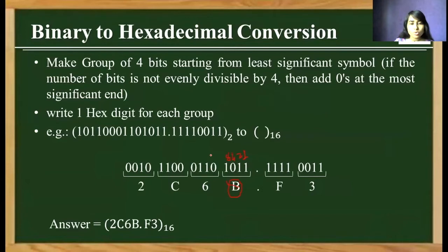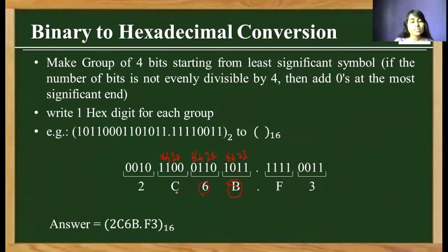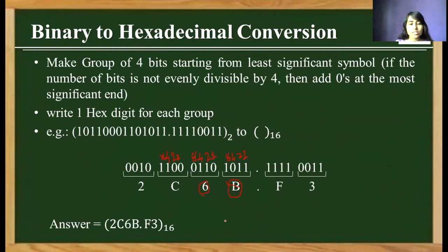Continuing the example: using weights 8, 4, 2, 1 — for the pattern where 8 plus 4 equals 12, and 12 is equivalent to hex number C. Working through all groups this way, we get the final answer 2C6B.F3 in hexadecimal.